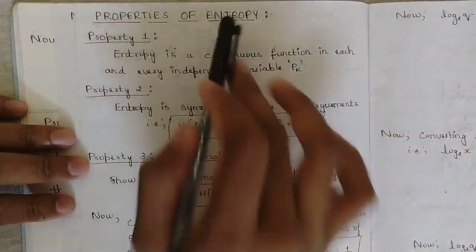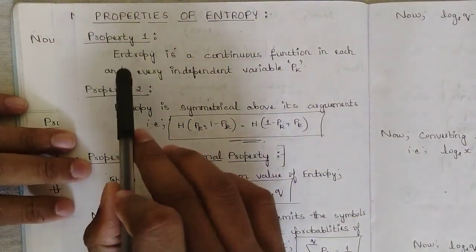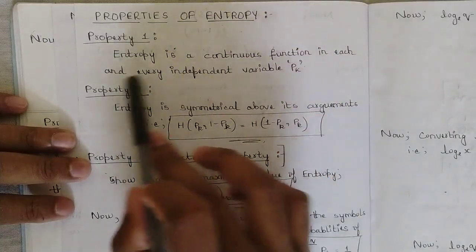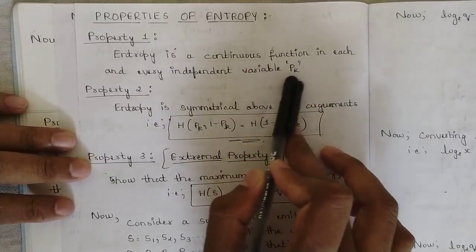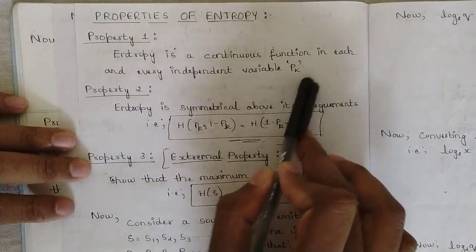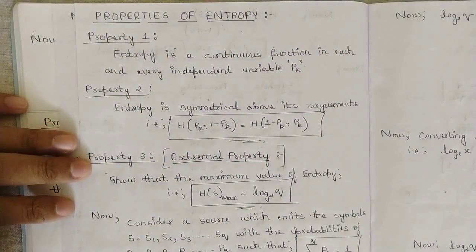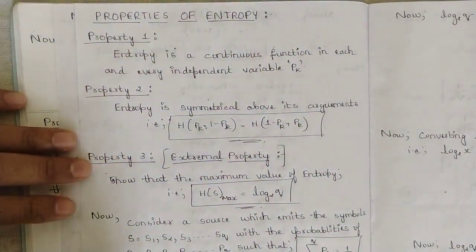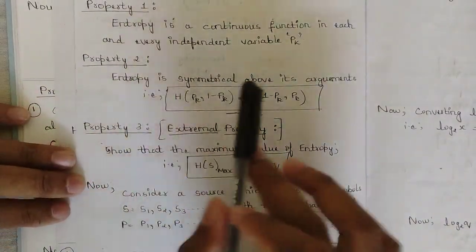Let us get to the concept now. Properties of entropy. Property one: entropy is a continuous function in each and every independent variable P of K, where this independent variable is also the probability. Based on different sets of probabilities, the entropy could be calculated for all those sets together. That's why it is a continuous function.